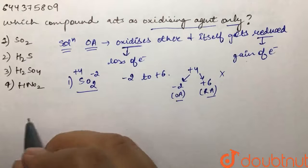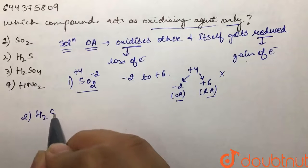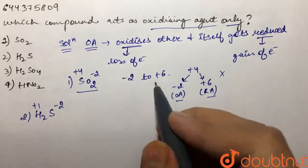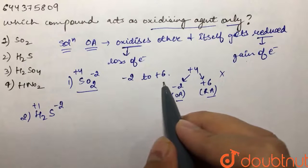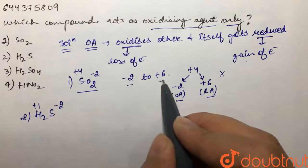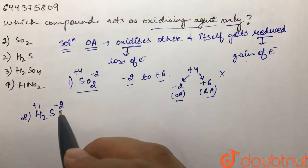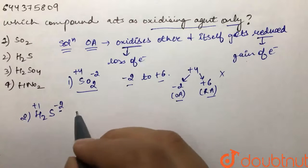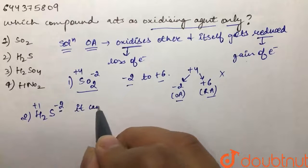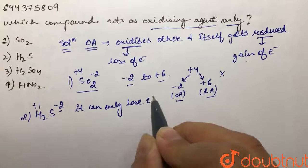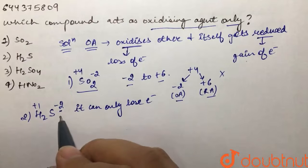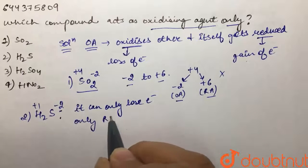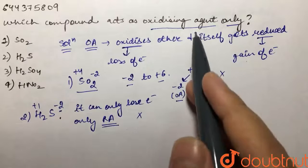In the second case, H₂S: hydrogen is +1, we have 2 hydrogens, and sulfur is -2. The possible oxidation states of sulfur range from -2 to +6. Since sulfur is already at -2, it cannot further gain any electrons — it can only lose electrons, meaning it can only get oxidized and act as a reducing agent only. So this is not our answer either.